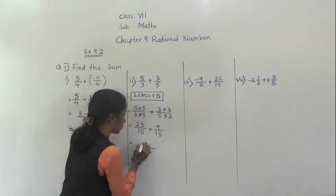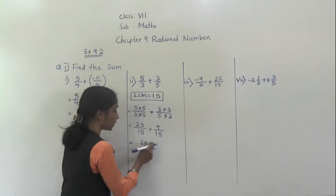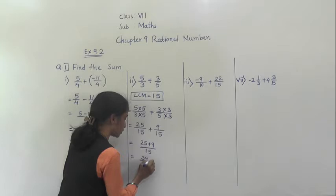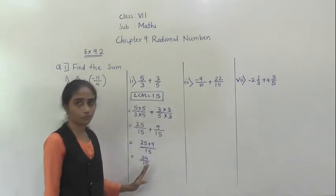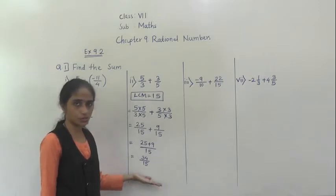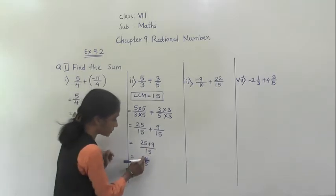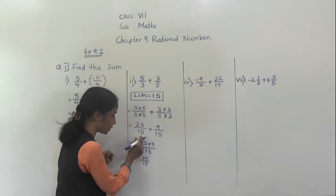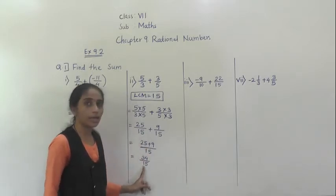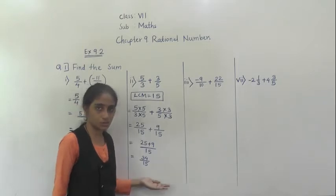Since both denominators are the same, write denominator once. We are going to add the numerators: 25 plus 9 equals 34. So what we got? 34 upon 15. You can convert this into mixed fraction also. 9 plus 5 is 14, carry 1, 2 plus 1 is 3, so 34. Answer is 34 upon 15.